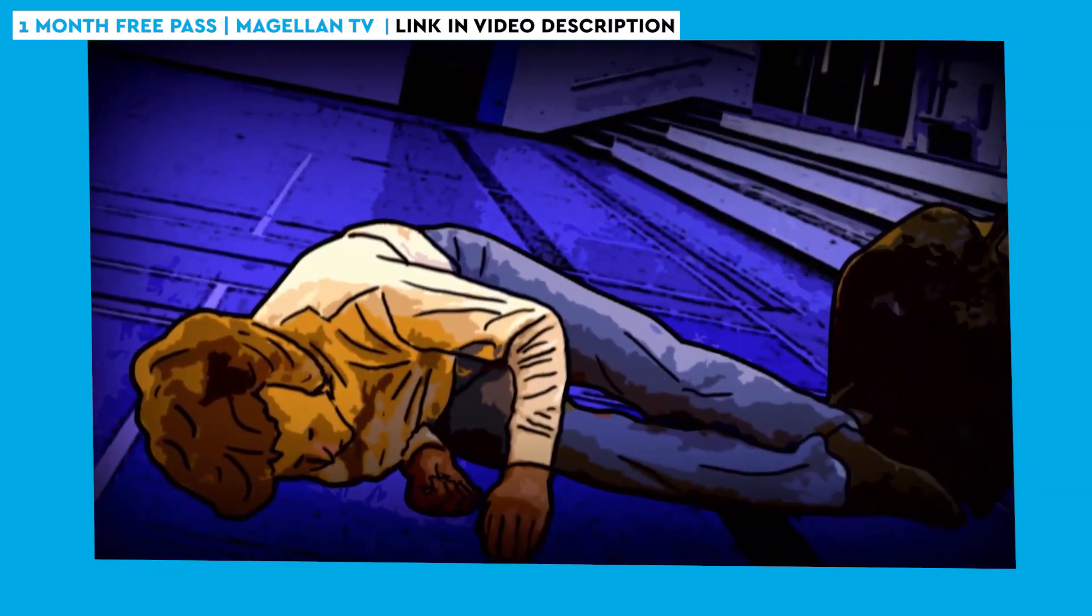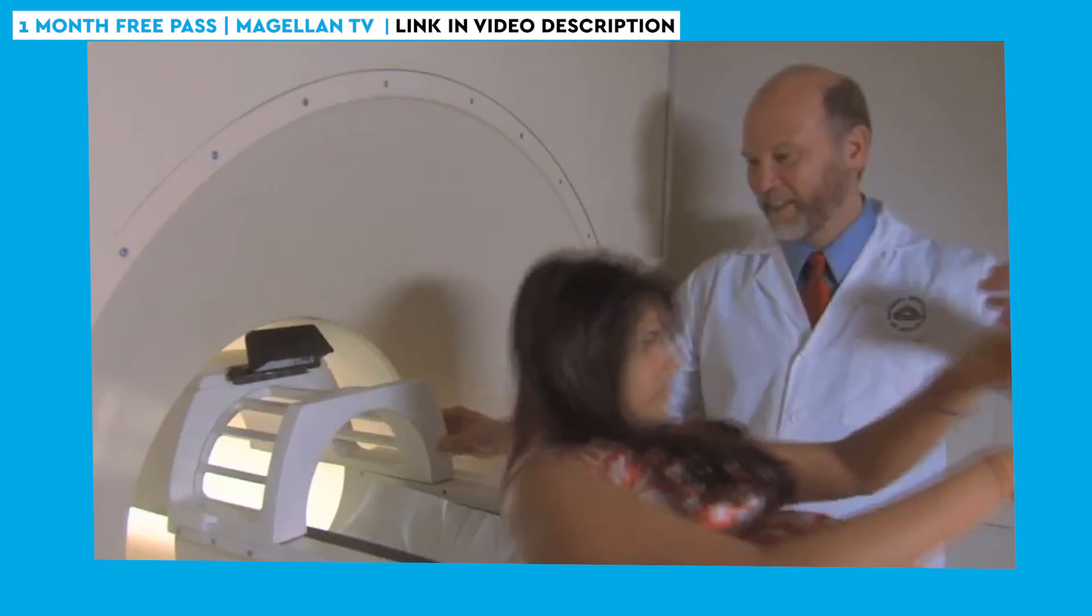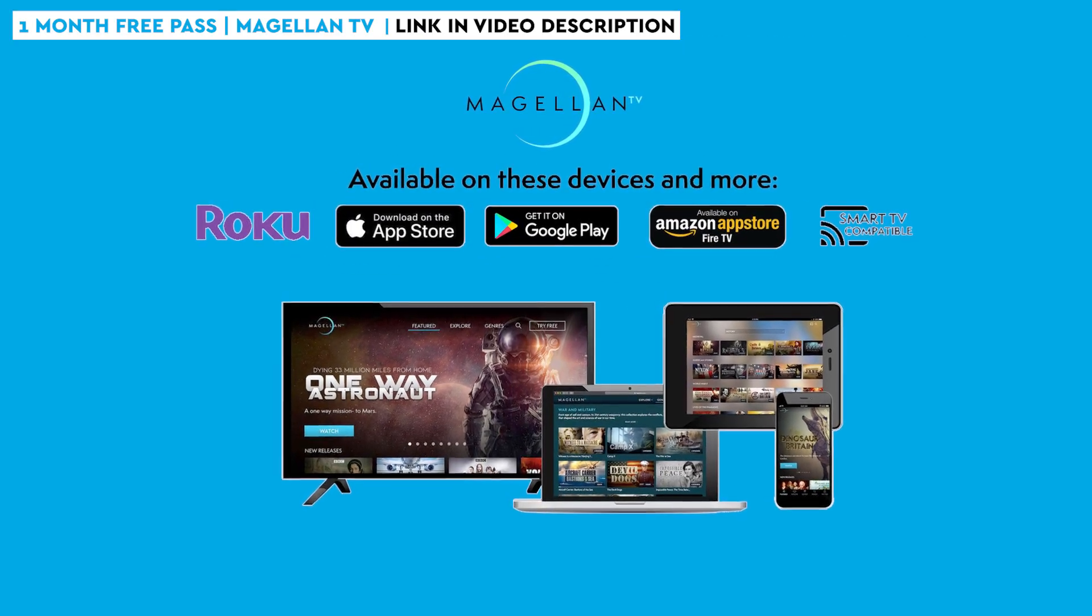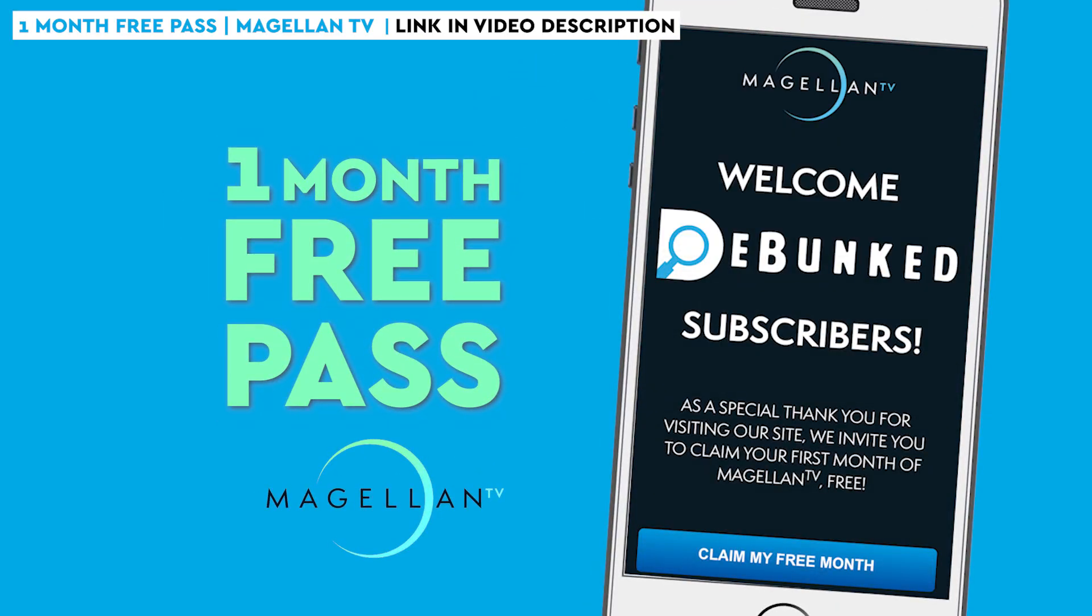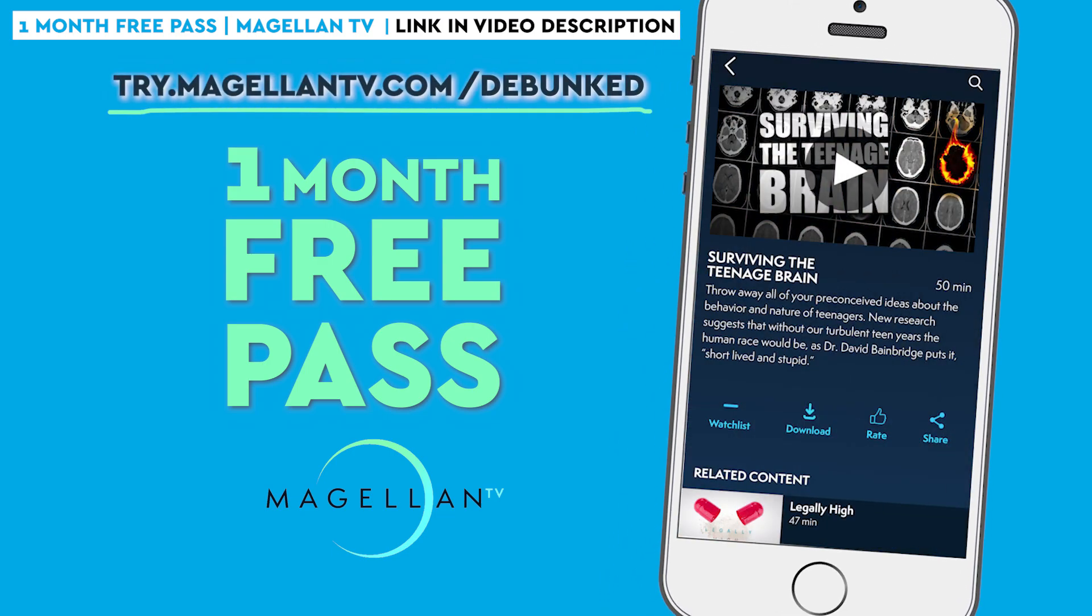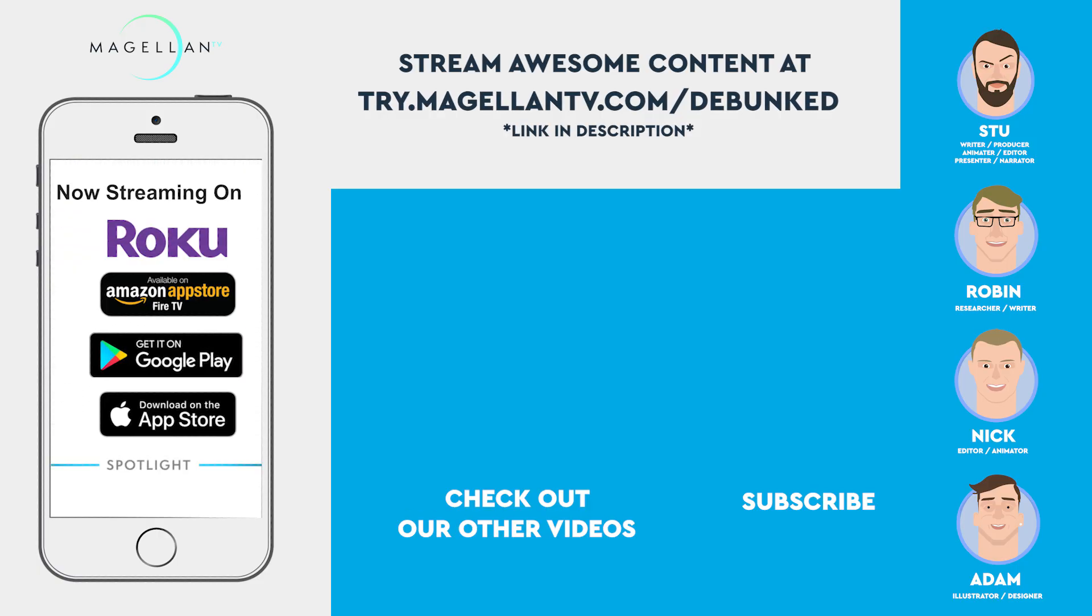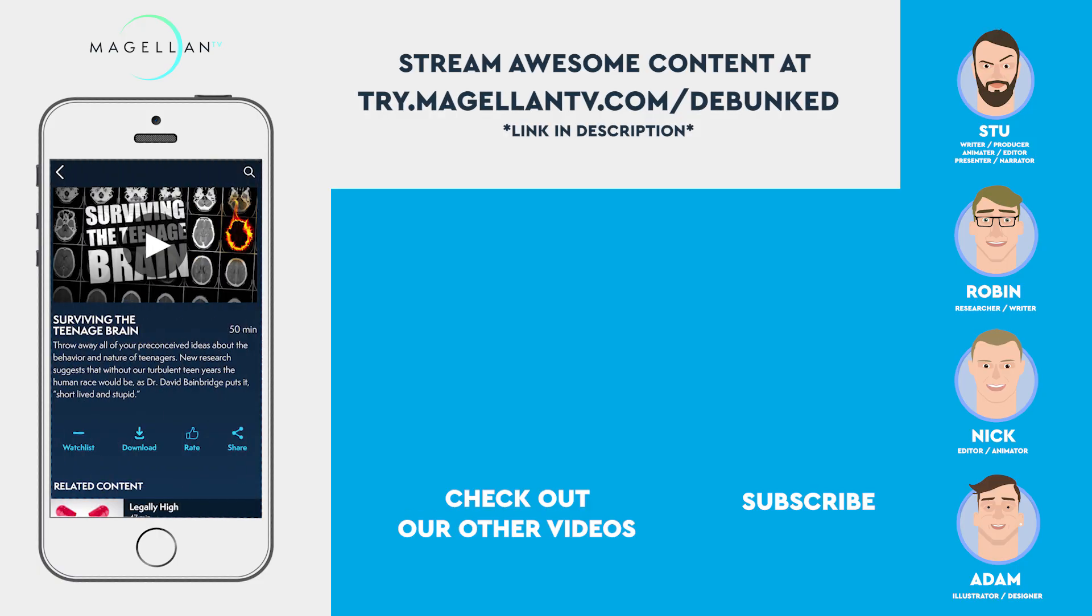Adolescence is so important because it is the evolutionary adaptational component which leads to our species surviving. Then we'd highly recommend watching Surviving the Teenage Brain, a great documentary where you'll discover all of this from a scientific and evolutionary point of view. Watch this and tons of other brain-boggling documentaries for free by clicking on the link in the description or visiting try.magellantv.com/debunked. Support from MagellanTV helps us keep making more of the content you love. So please head on over and grab yourself a free pass to some mind-expanding entertainment. Thanks for watching and we'll see you next time.